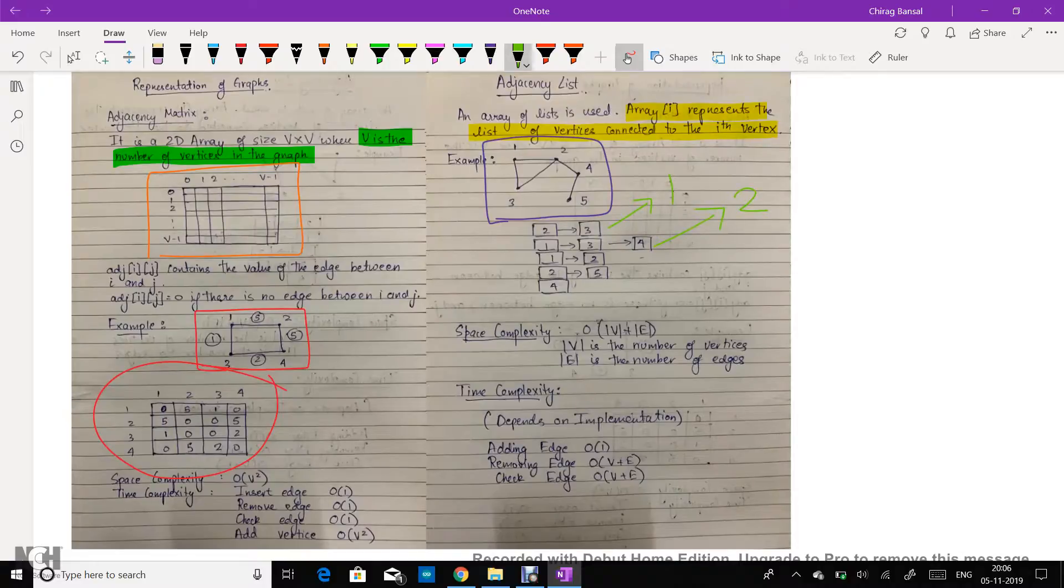As we can see, node 2 is connected to 1, 3, and 4. Therefore the list contains elements 1, 3, and 4. Now let's look at its complexities.